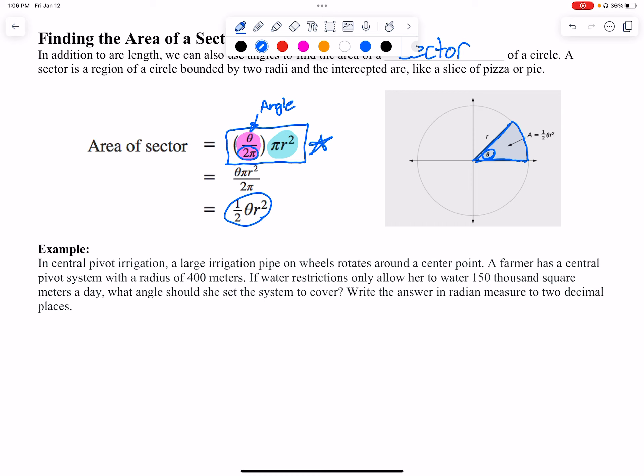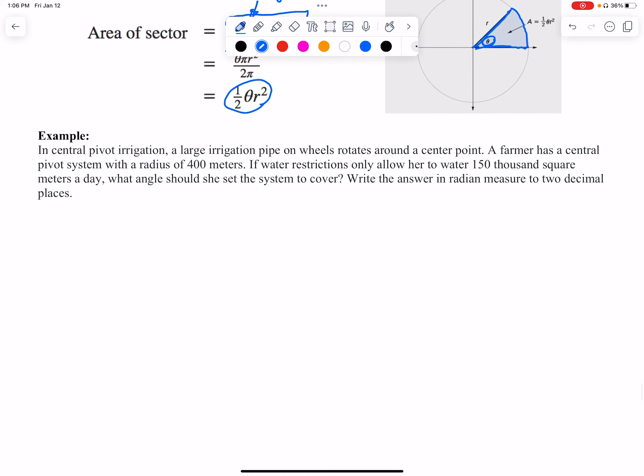In the central pivot irrigation, a large irrigation pipe on wheels rotates around the center point. A farmer has a central pivot system with a radius of 400 meters. So we're gonna deal with a circle here.